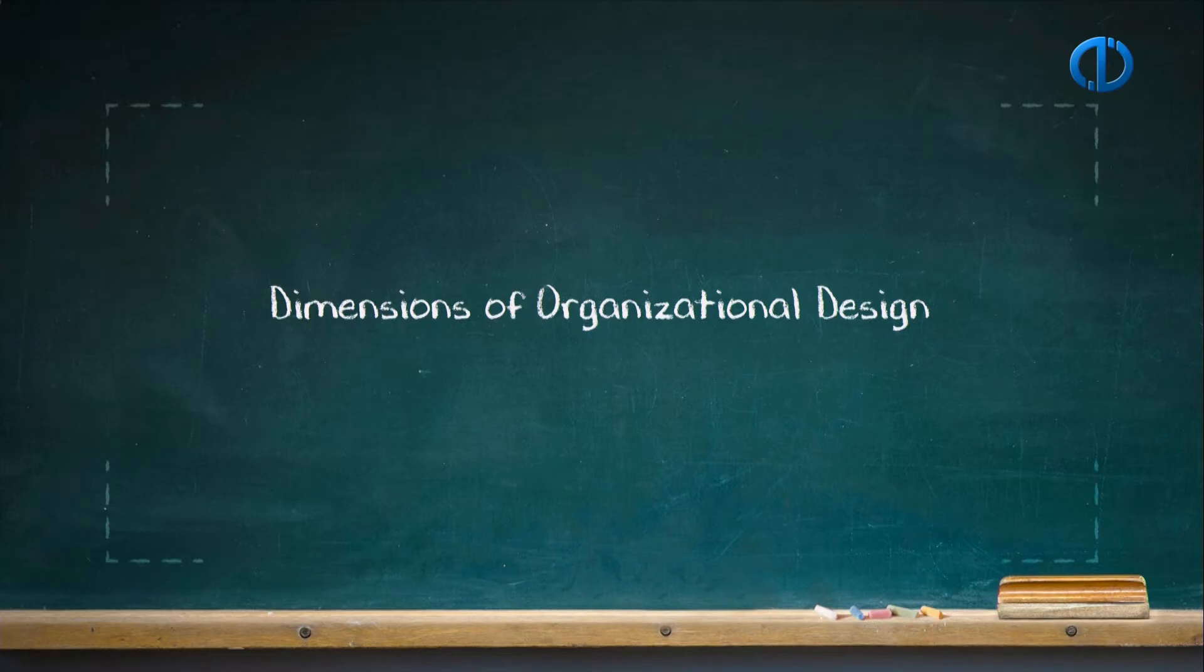Let's continue with the dimensions of organizational design. The dimensions of organizational design have been grouped into two basic categories. Structural dimensions are sorted as formalization, specialization, the hierarchy of authority, centralization, professionalism, and personal ratios.